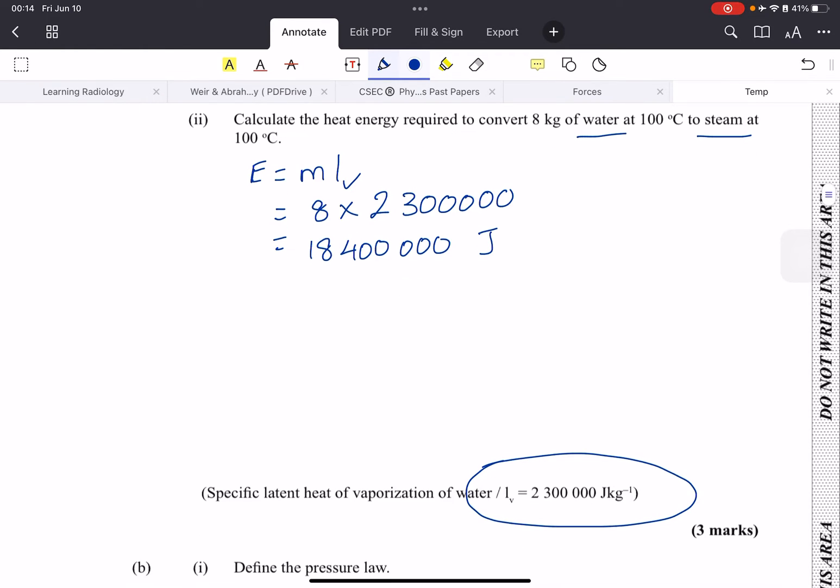You can leave it as that if you want, or you could change it to standard form. So we put it in our calculator: one, two, three, four, five, six, seven. This would be 1.84 times 10 to the 7 joules. Either one is fine.